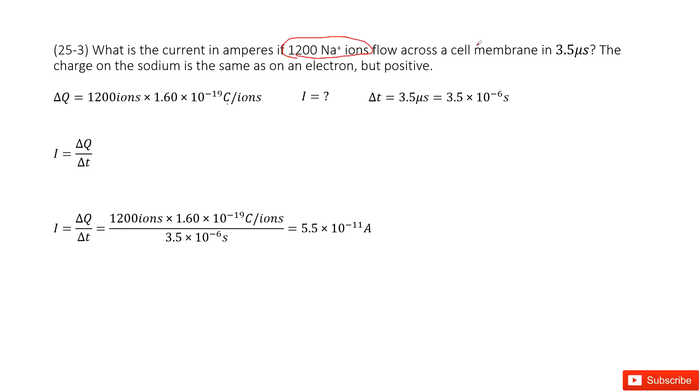And then we know this charge flows through the cell membrane. The time taken is 3.5 microseconds. So there we write it as delta t equals 3.5 microseconds.